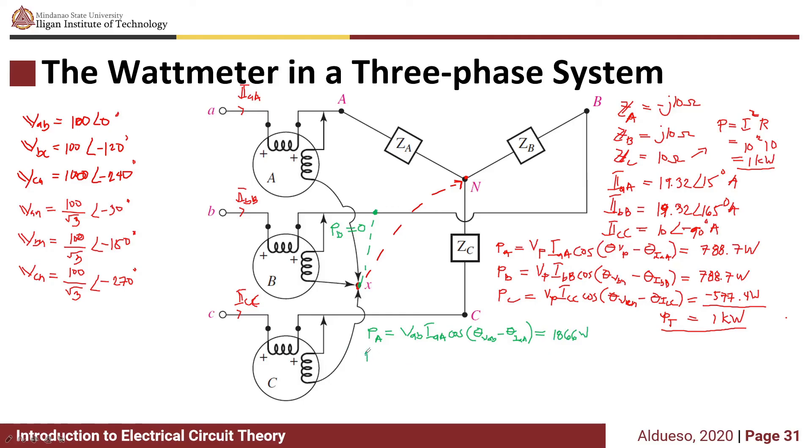For wattmeter C, the voltage measured is VCB and the current measured is ICC, times cosine of theta VCB minus theta of ICC.